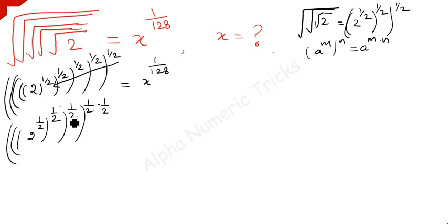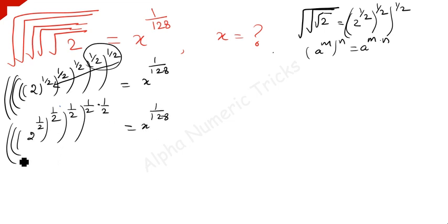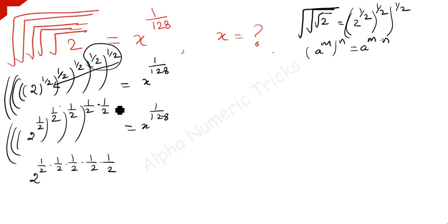But here the same number is repeated. So for these two terms it can be written as just multiplied: 1 over 2 times 1 over 2. In the same way we can multiply these terms also. So, 2 to the power 1 over 2 times 1 over 2 times 1 over 2 times 1 over 2 — because here these two terms are multiplied. So how many times? 5 times multiplied, which is equal to x to the power 1 over 128.